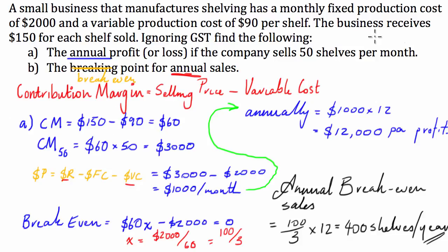So, once we've done that, we can get our annual profit or loss for the 50 shelves per month annual figure, monthly figure, sorry. And in part B, the break-even point, all you're going to do is find out how many units you're going to sell with a contribution margin, whatever it is, to cover your $2,000 fixed cost.